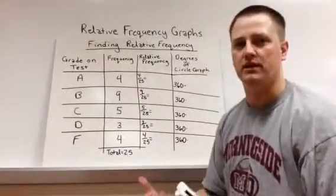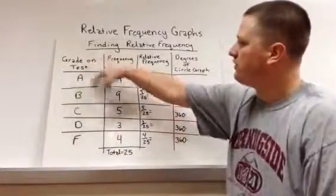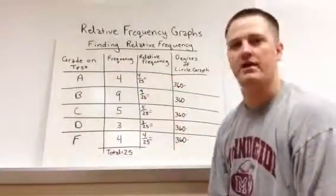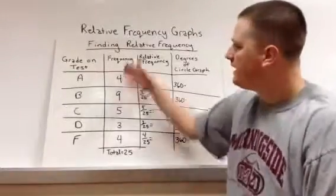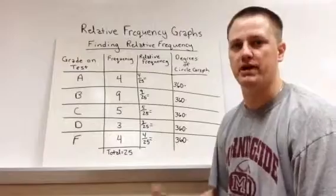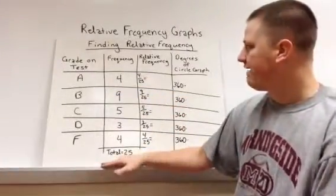As in all graphs, we need to start with data. So I have some data up here. Grades on the test, we've gone with just A through F for simplification, no pluses or minuses, and the frequency with which each happened. So 4 A's, 9 B's, and so on. We have a total of 25.